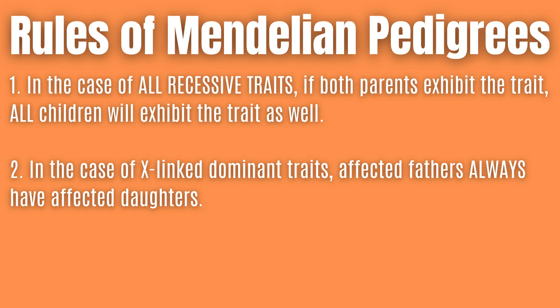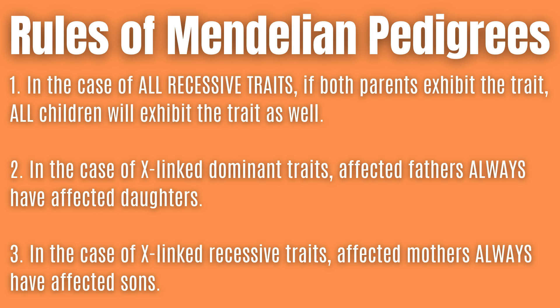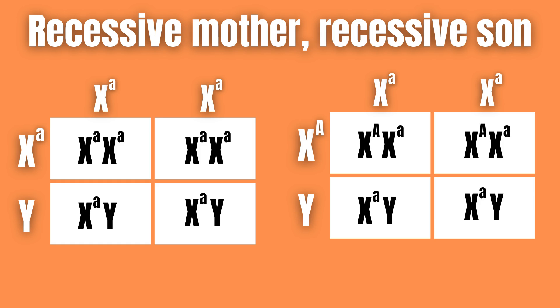In the case of X-linked dominant traits, affected fathers always have affected daughters, as shown in the Punnett squares on the screen. Finally, in the case of X-linked recessive traits, affected mothers always have affected sons.